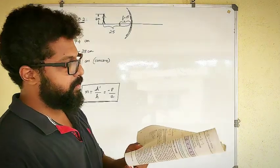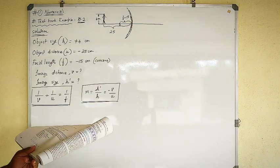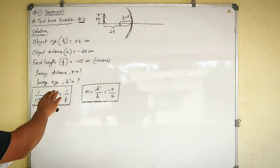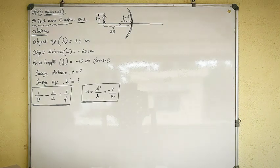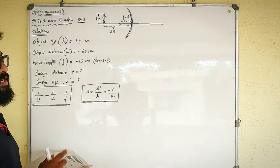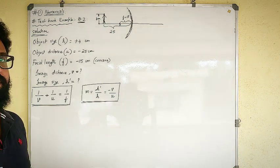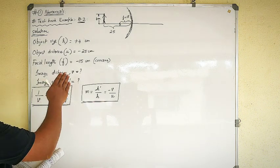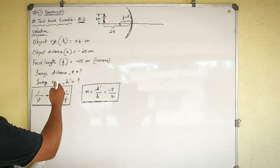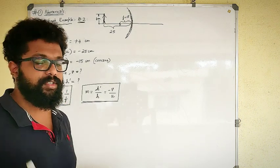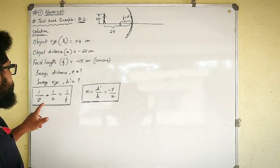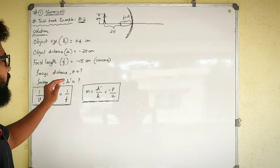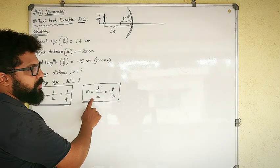The question asks: at what distance from the mirror should a screen be placed to obtain a sharp image? Find the nature and size of the image. So we need to find the image distance V and the image size H dash. A sharp image means a focused image — we need to find where the image is formed, its distance, its size, and its nature.